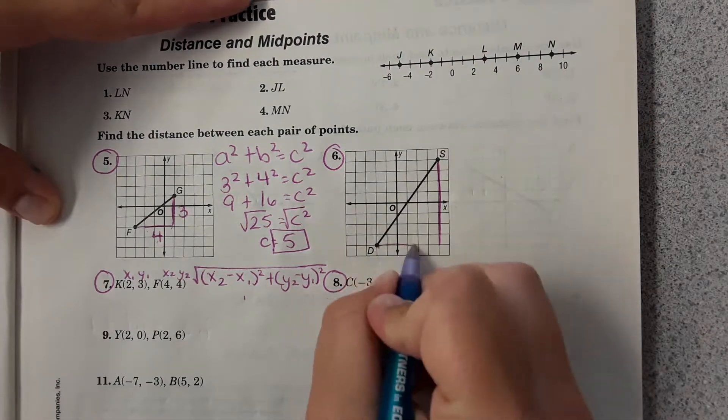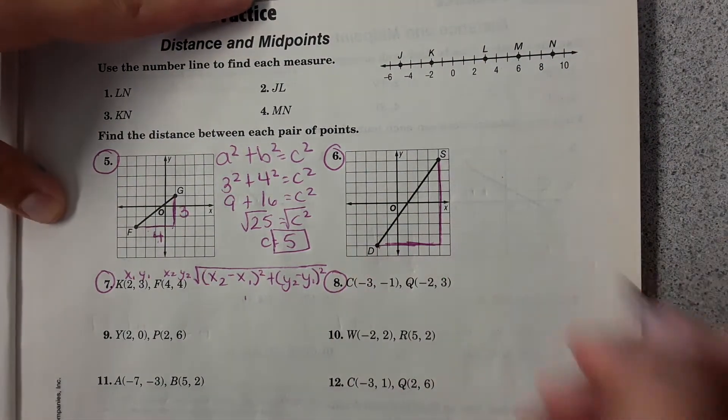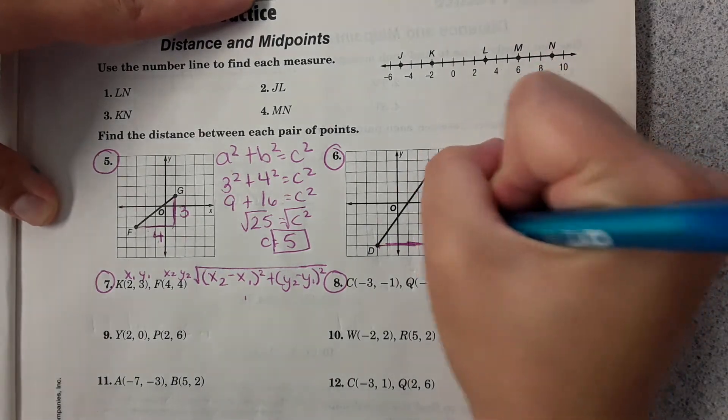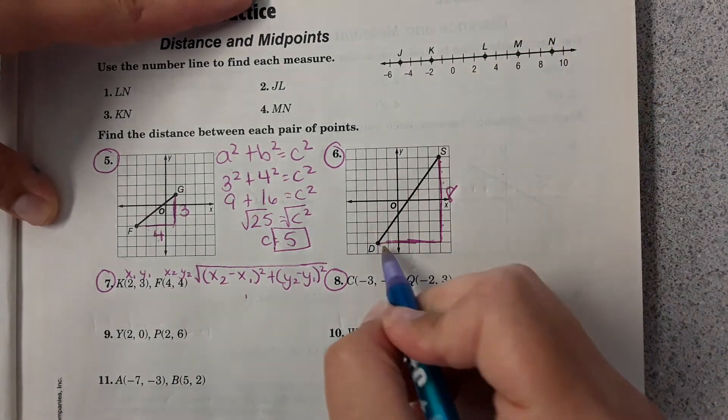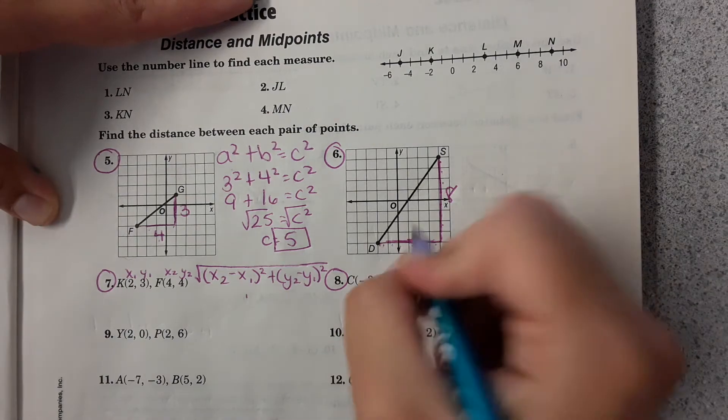Again, draw your right triangle here. Count the units. 8, 8.